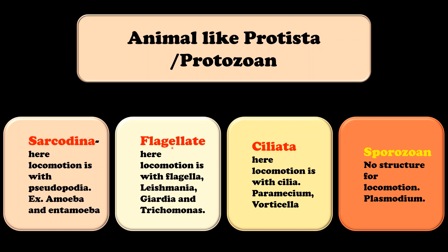Examples like Leishmania, Giardia and Trichomonas show locomotion with the help of flagella, so this group is called Flagellata or flagellates. Ciliata is the third group and they show locomotion with the help of cilia — the example is Paramecium. The fourth group is Sporozoans; these organisms don't have any structure for locomotion, and the example is Plasmodium.